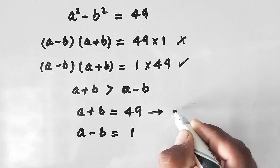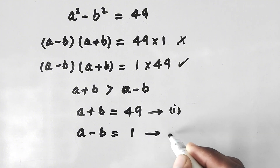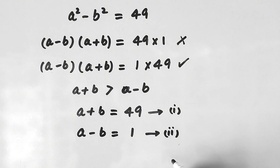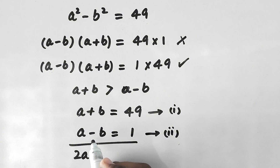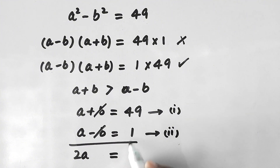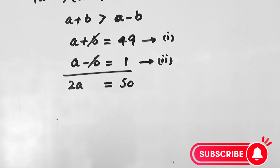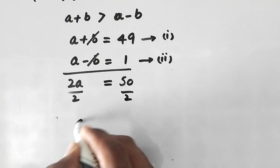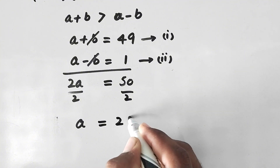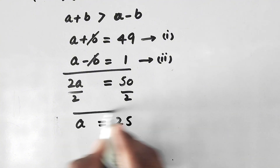We write: a plus b equals 49 as equation 1, and a minus b equals 1 as equation 2. Adding both equations, the b terms cancel out, giving 2a equals 50. Dividing both sides by 2, we get a equals 25.